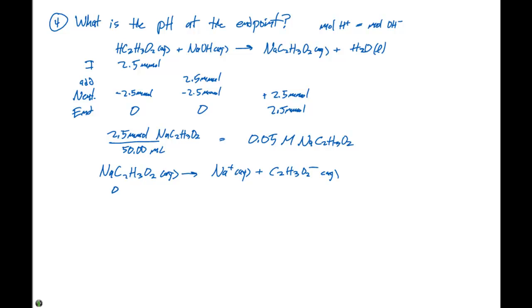And if we have 0.05 molar sodium acetate, that means we have 0.05 molar sodium ions and 0.05 molar acetate ions. We don't really care about the Na+ because this is going to be neutral, because it's the conjugate acid of NaOH, which is a strong base.